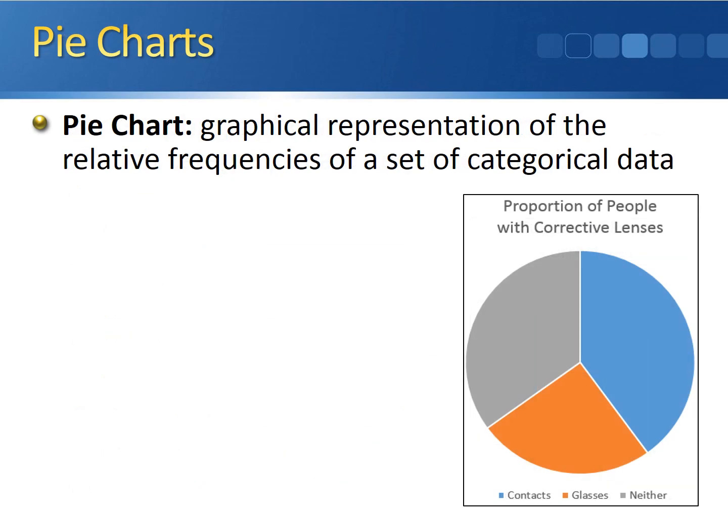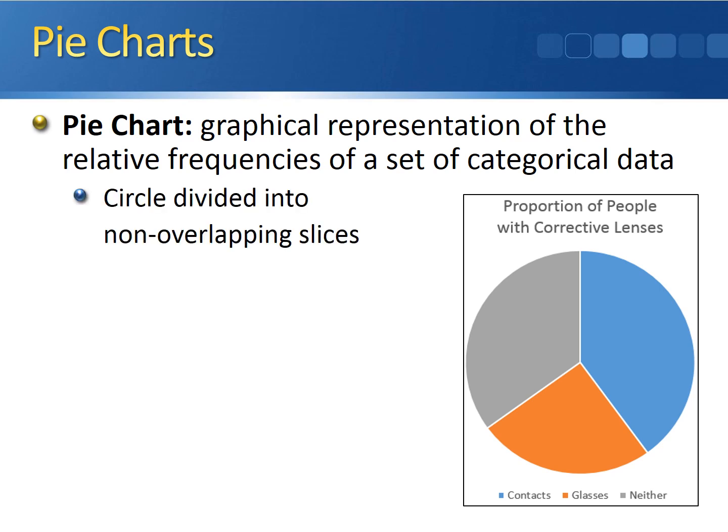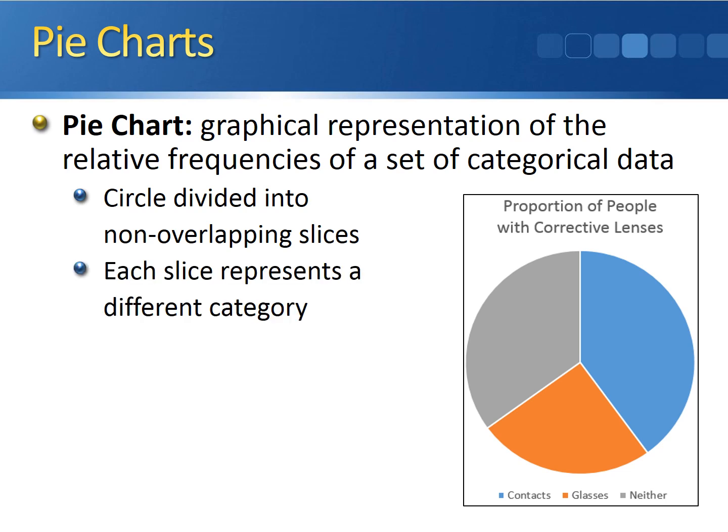A second way of displaying categorical data is a pie chart, which is a graphical representation of the relative frequencies of a set of categorical data. Unlike bar graphs, which use actual counts, pie charts use relative frequencies. A pie chart is a circle divided into non-overlapping slices, so no observation can belong to more than one category. In our case, respondents were limited to contacts, glasses, or neither, with no overlap between groups.